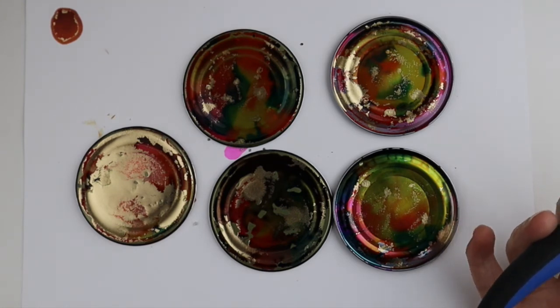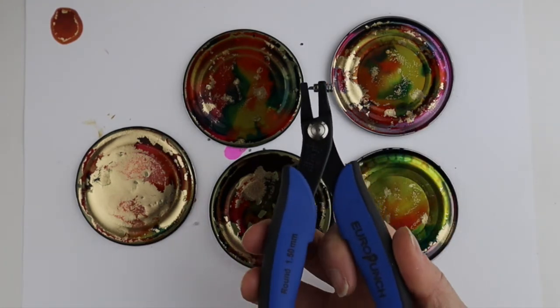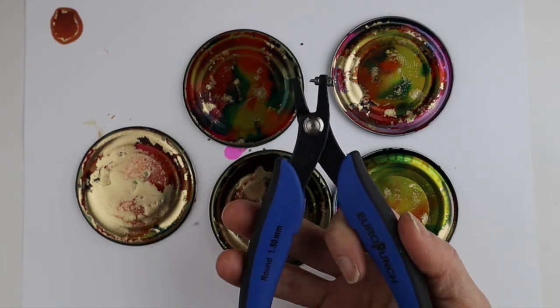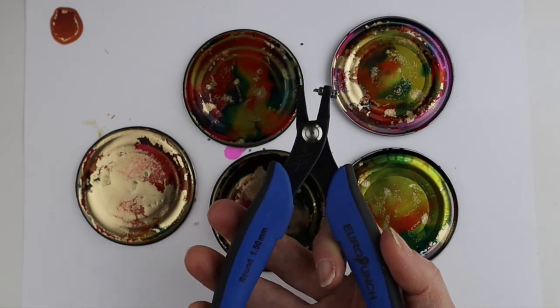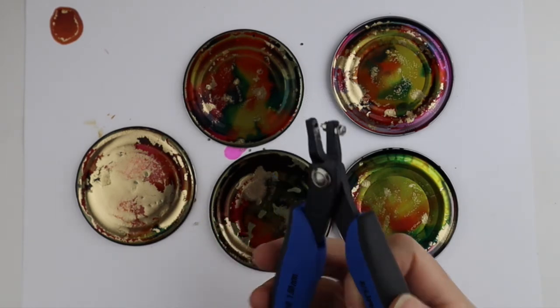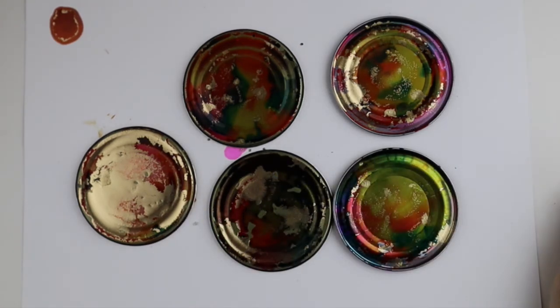Before I painted them I actually poked a hole with this hole punch from Beaducation. I had this in my metal stamping kit, but if you don't have a hole punch for metal you can just poke a hole with a nail.